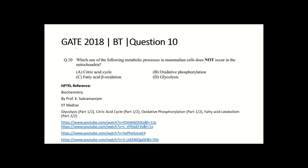Hello everyone. In this video we will discuss question number 10 of GATE 2018. The question asks which one of the following metabolic processes in mammalian cells does not occur in the mitochondria: fatty acid cycle, oxidative phosphorylation, fatty acid beta oxidation, and glycolysis.